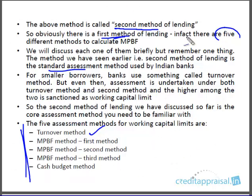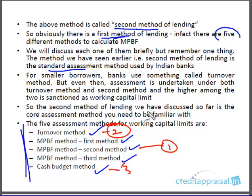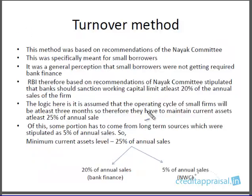The five assessment methods are: turnover method, MPBF first method, second method, third method, and cash budget method. The second method is the number one most preferred. Turnover method is also followed — the second most popular — and is specifically for small borrowers. For large borrowers you invariably use the second method. Cash budget is another method followed for seasonal industries. The first and third methods are actually not implemented in any banks — they are of academic interest only.